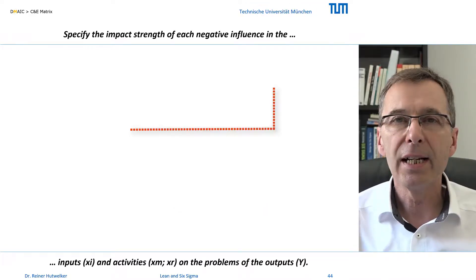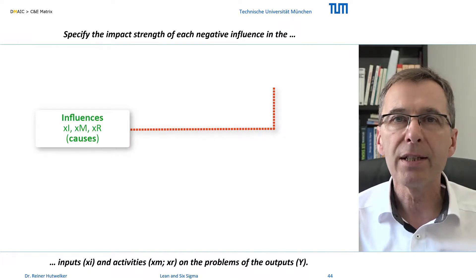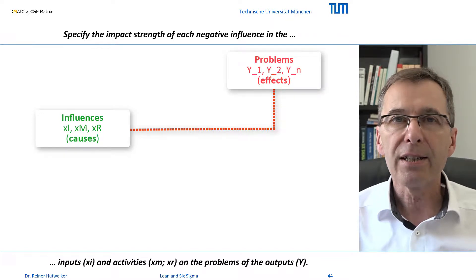The C and E matrix links the identified influences of the input and process mapping analysis as causes with the defined problems, their effects.